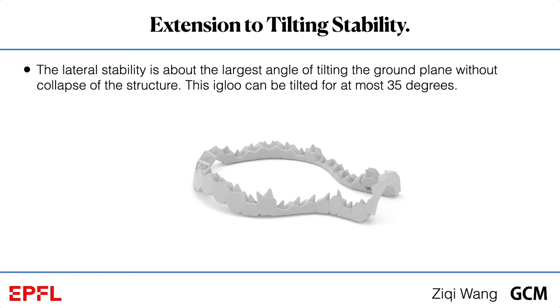Our method can optimize structure for obtaining more tilting stability. The igloo can be tilted for at most 35 degrees before collapsing.